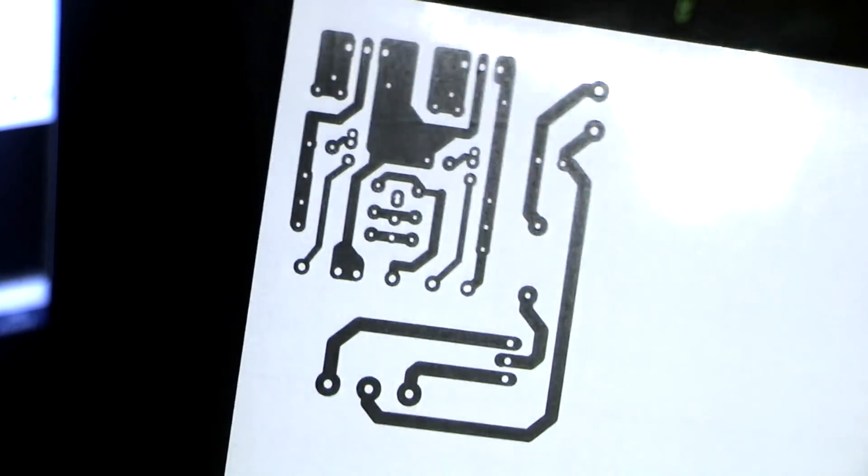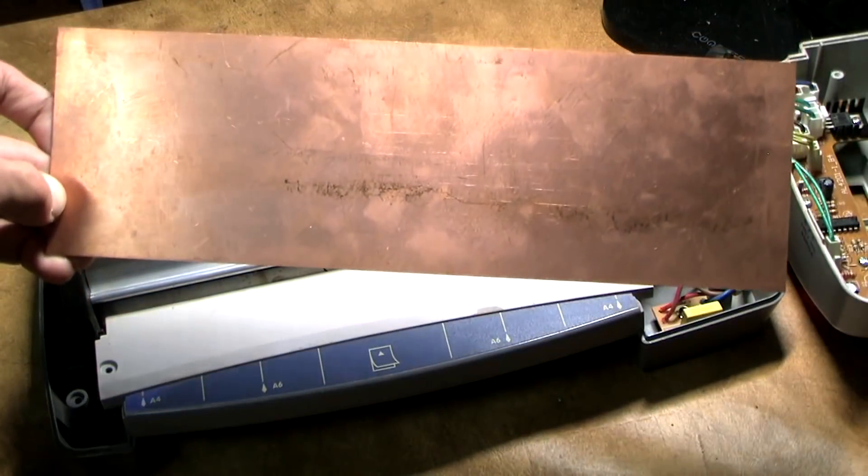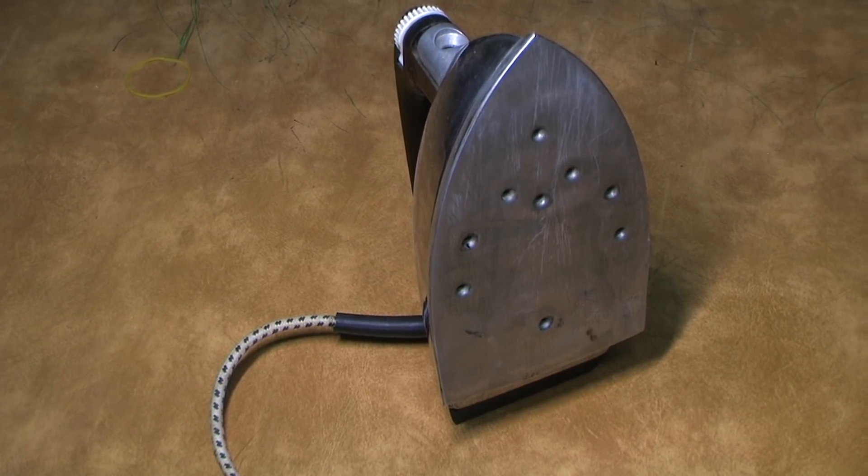After printing, we get a template of the printed circuit board which must be transferred to a foil on textolite. For this purpose, the iron is used. The ideally smooth surface of the heating surface of the iron also plays a significant role.